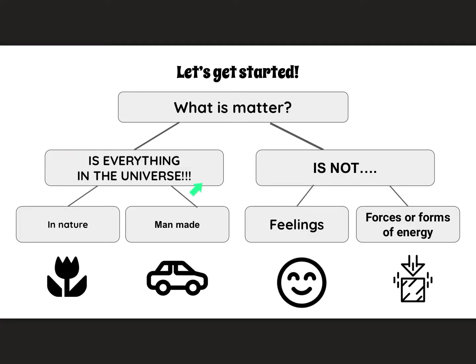So what is matter? Matter is everything in the universe. Some things exist because they are naturally occurring, such as flowers, trees, water, your dog, and you. Other things humans have made — think about our car and all the different materials that make it up; those are all man-made. What matter is NOT are things we cannot measure, such as feelings, forces, or forms of energy.